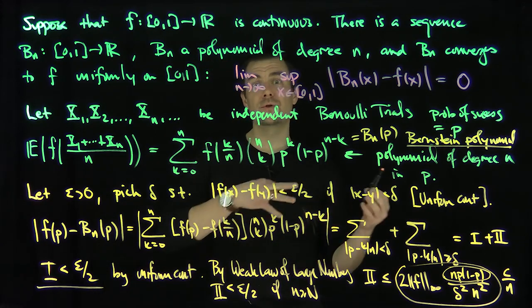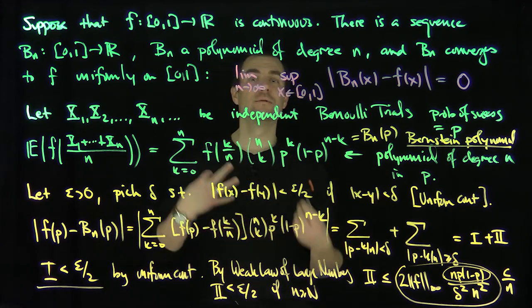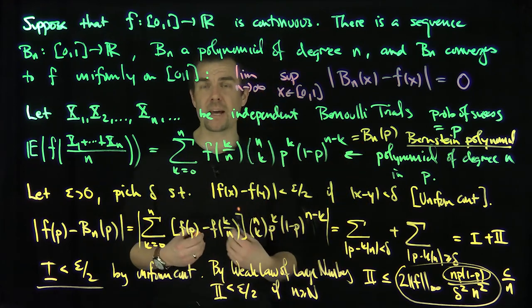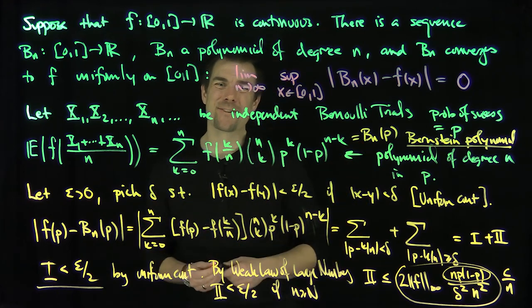What I've just shown is I've just shown that this difference can be made less than epsilon if n is bigger than or equal to N capital, and that's true for any p in the interval, so that's true in particular for the supremum. I've just shown that this sequence Bn(p) converges uniformly to f(p) as n goes to infinity. Thank you very much.